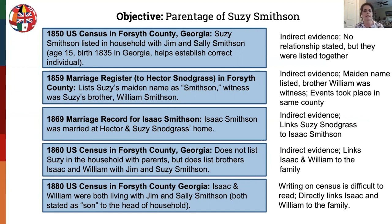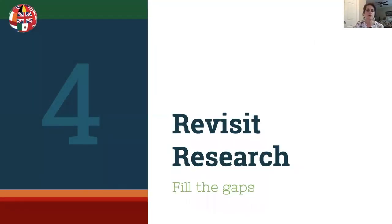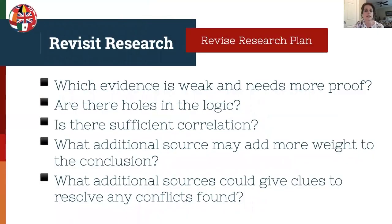On the right-hand column, I have made some basic notes to help get started with the writing process. Step four is to revisit your research and fill in the gaps. Once you start the organizing process, you may notice these gaps, and it's really important to go back and redo some research if needed. Questions to ask yourself include: Which evidence is weak and needs more proof? Are there holes in the logic? Is there sufficient correlation? What additional sources may add weight to the conclusion, and what additional sources could give clues to resolve any conflicts found?